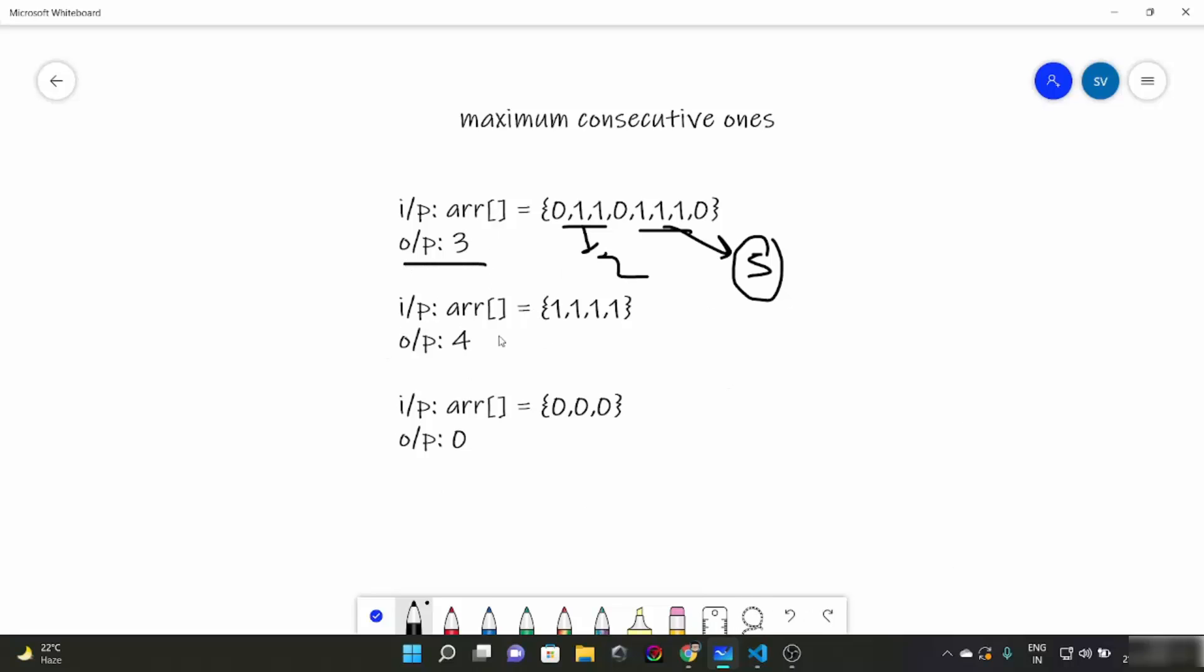Similarly in this case, this is the corner case where all the numbers of an array are 1's, so what would be the output? Four. And in this part, this is also a corner case where there is no 1, all are 0's, so what would be the output? Simply 0.